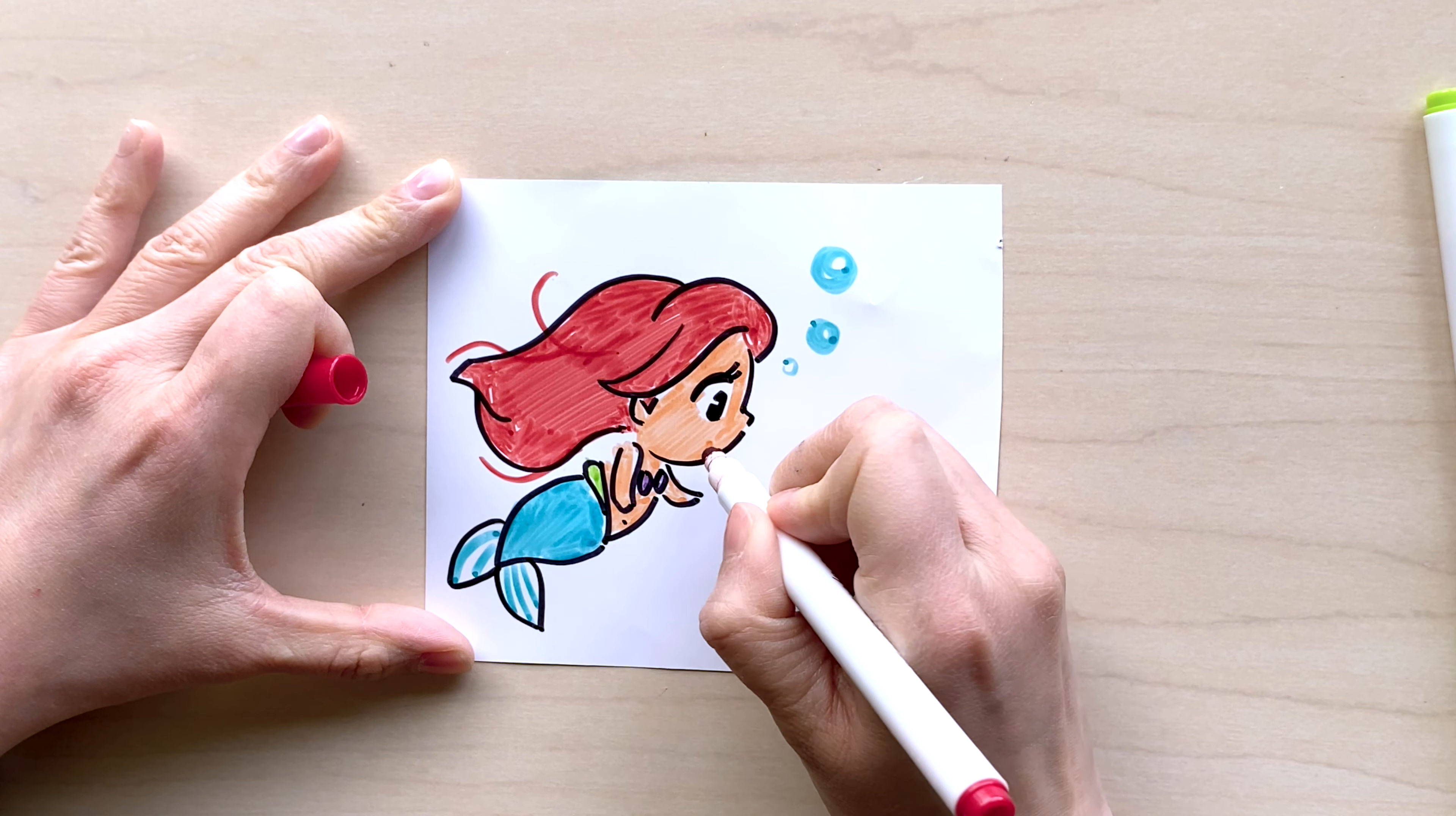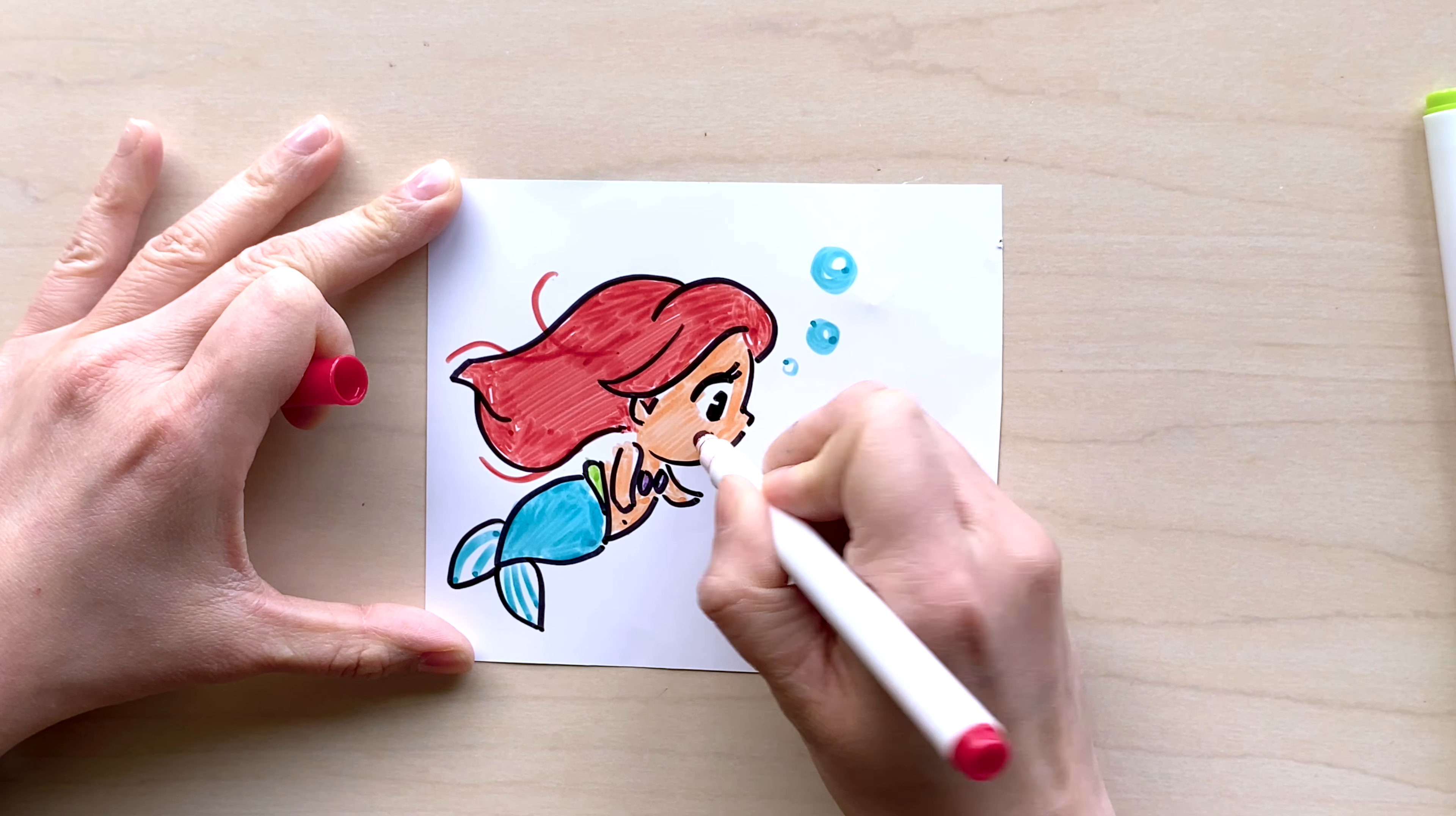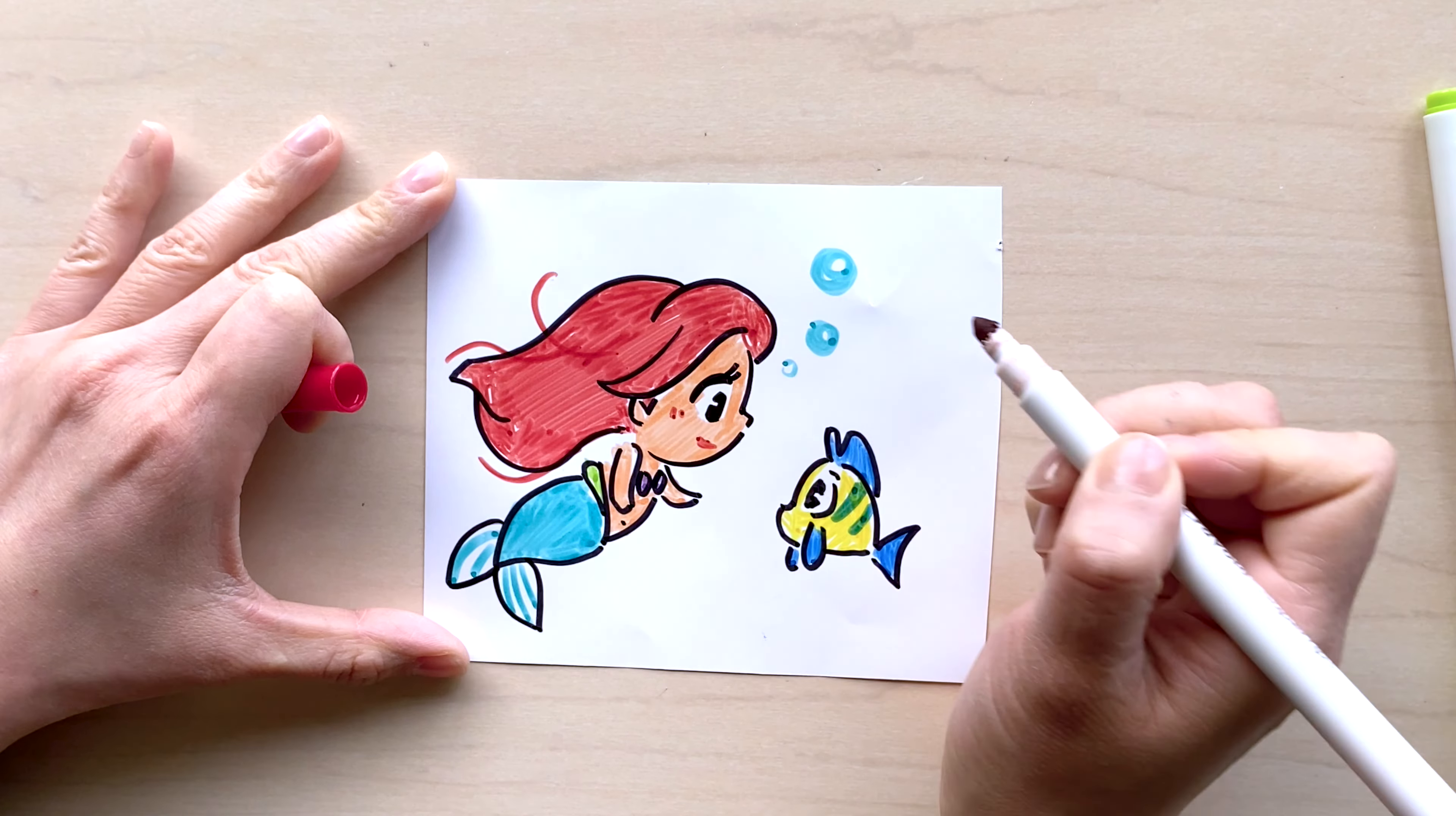You can see those loose hairs are just very smooth lines, very curvy lines, and I'm using the same red color to draw in the lips for Ariel. She's smiling and she's talking to Flounder, and I also added in a little bit of blush on her face using this red marker.